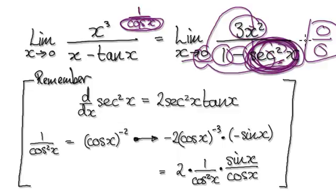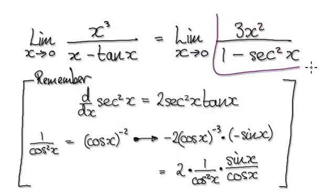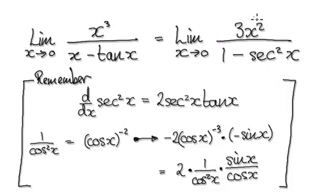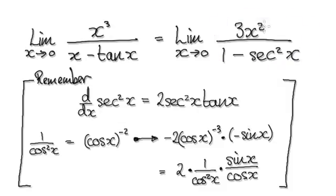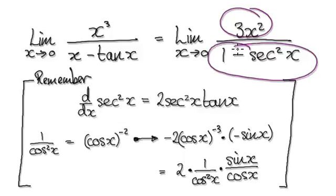So here you've got 0 over 0 — it's an indeterminate form. So we need to differentiate this whole thing again. We need to apply L'Hôpital's rule on this, so we need to differentiate this and differentiate this.